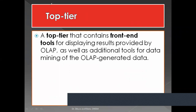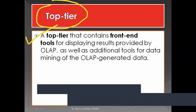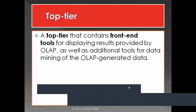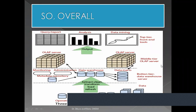Now the top tier — this is a revision of what we have already discussed. The top tier contains tools for displaying results provided by OLAP and some tools for data mining of the OLAP-generated data. Remember the diagram shown in the last class. The topmost layer facilitates communication with outside users, and when business intelligence is concerned, we use data mining tools. Different algorithms and techniques for data mining will be discussed after finishing these data warehouse classes.